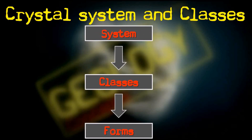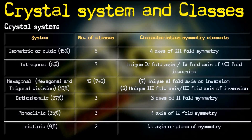To divide crystals, we already know there are crystallographic axes — these are imaginary lines passing through the center of the crystal but not lying in the same plane. These lines are of paramount importance while classifying systems. There are six major divisions of systems, and each system has some classes and every class has some forms.